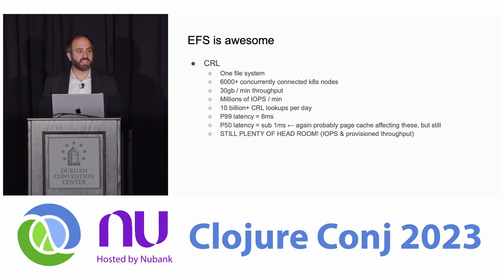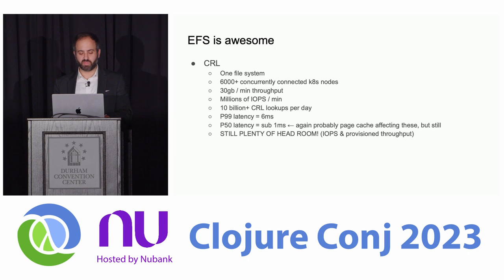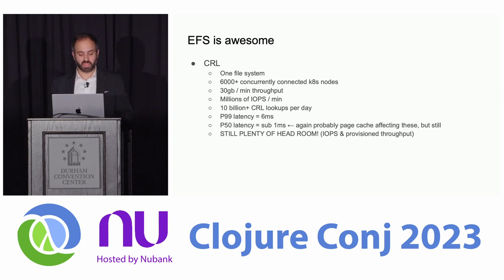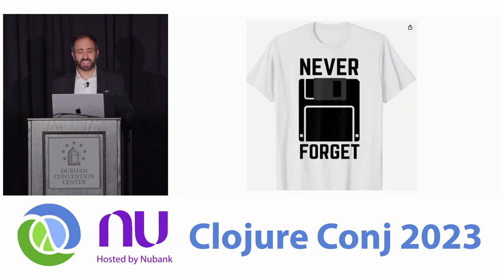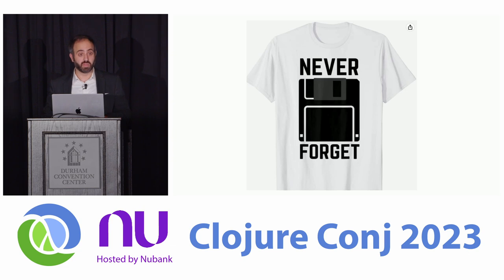We ended up using EFS to store a lot of these data sets and actually the index itself — this was a huge surprise to us. EFS is Amazon's Elastic File System. It is essentially NFS as a service and it performed better than we could ever imagine. We were getting sub-millisecond accesses. It scaled extremely well and it was easy to operate. In general though, disks are amazing — they are a forgotten tool in the toolbox. It's a shame that Kubernetes and container orchestrator tools de-emphasize disks and make them hard to use. You don't want to forget about using disks as an essential tool for designing systems.